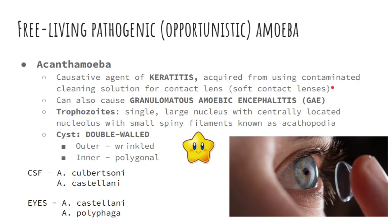If you are using soft contact lenses, please be careful — always wash your hands properly. Acanthamoeba can also cause granulomatous amoebic encephalitis or GAE. The trophozoite form has a single large nucleus with a centrally located nucleolus, and has small spiny filaments known as acanthopodia. The cyst is double-walled — the outer layer is wrinkled in appearance, while the inner wall is polygonal. The species causing GAE are Acanthamoeba culbertsoni and Acanthamoeba castellanii, while those causing keratitis are castellanii and polyphaga.